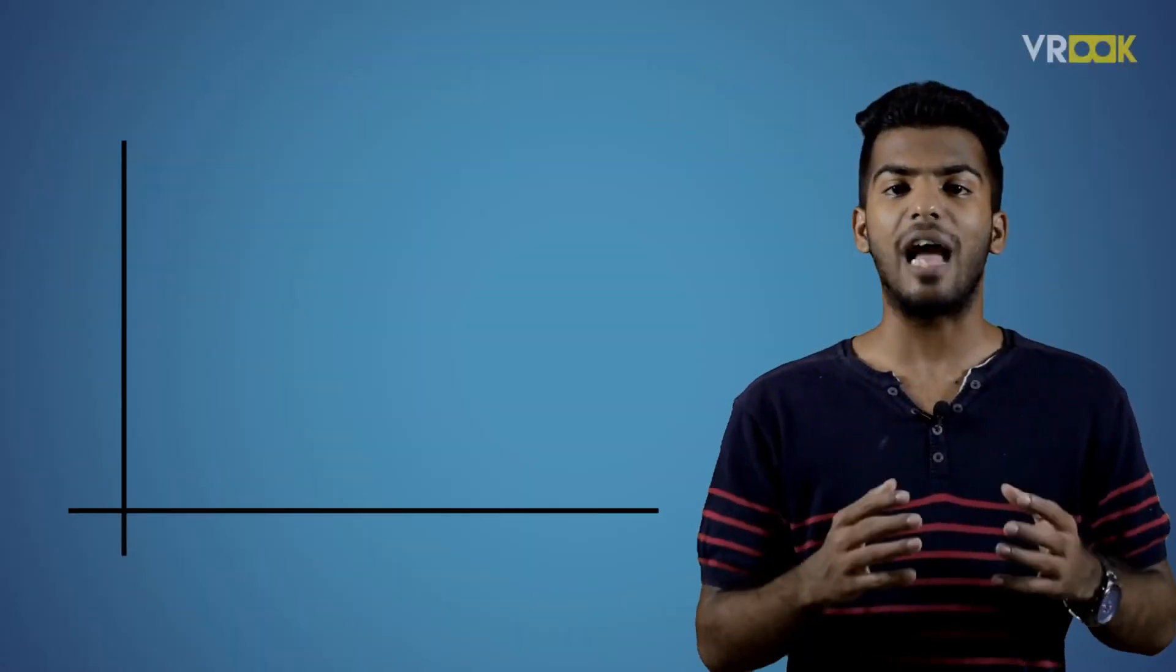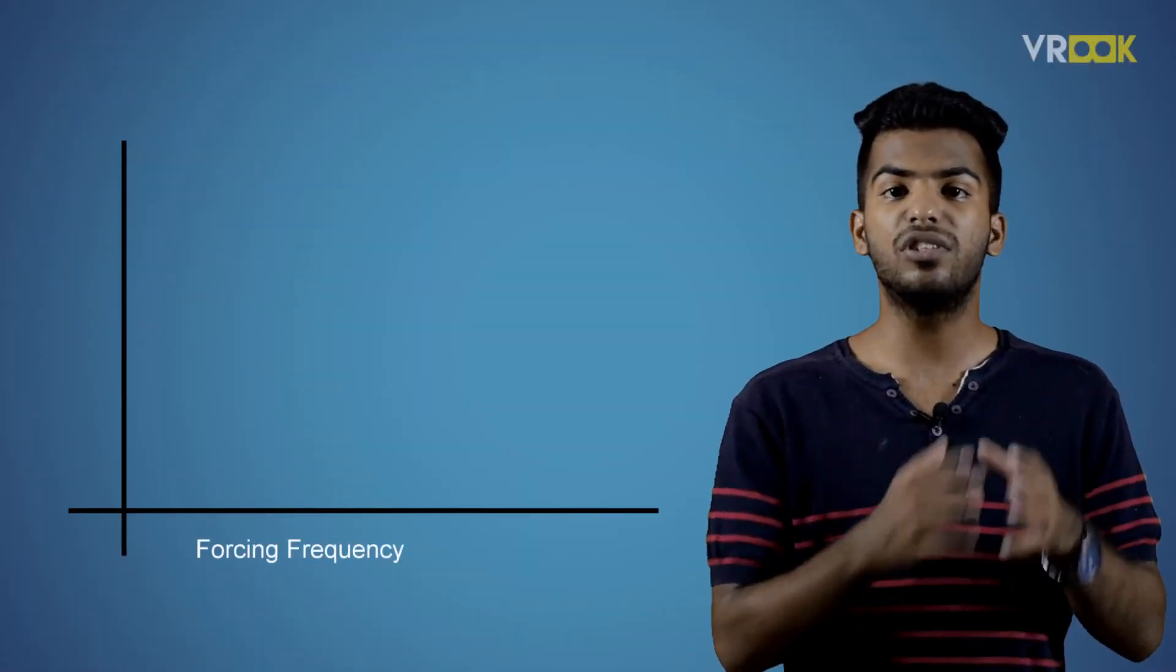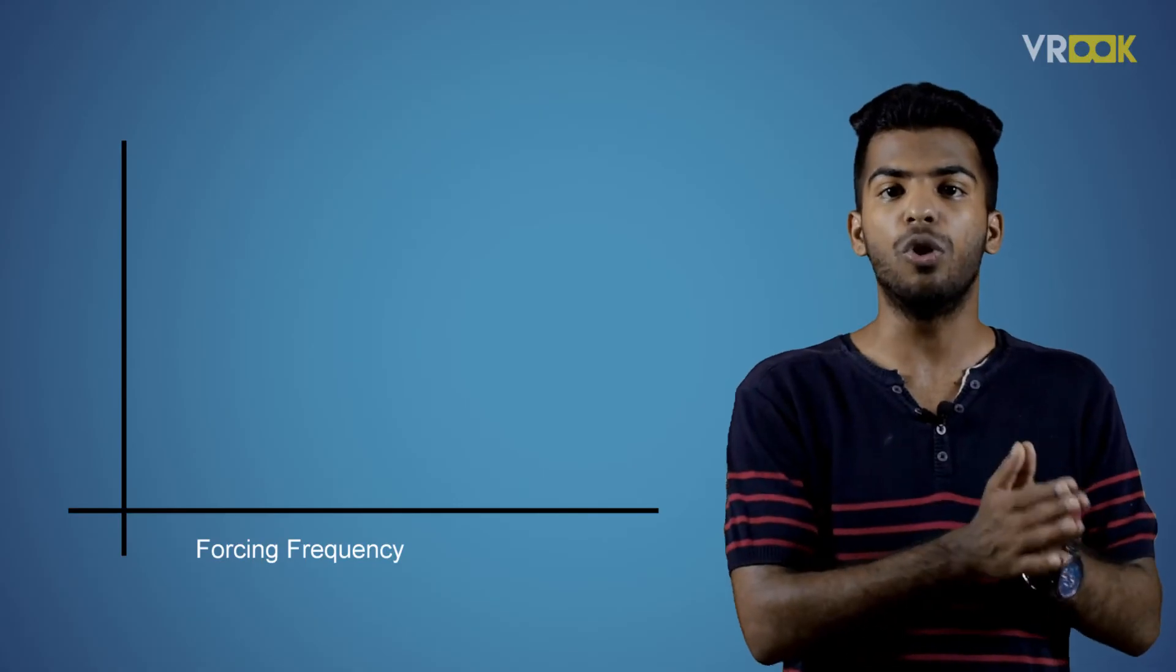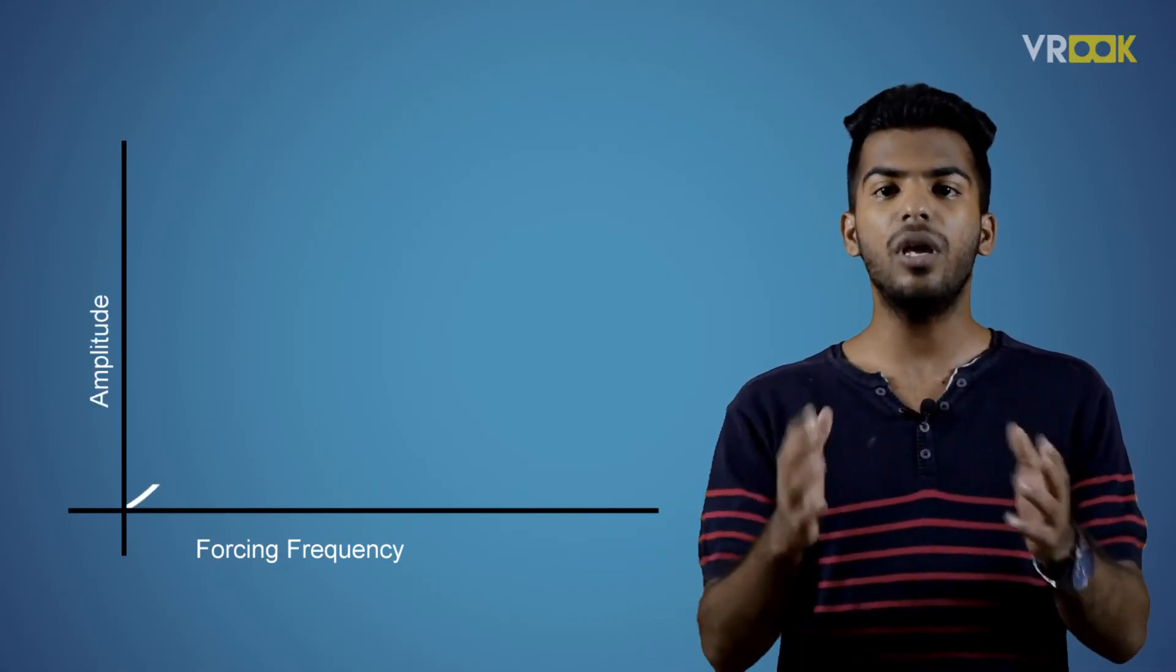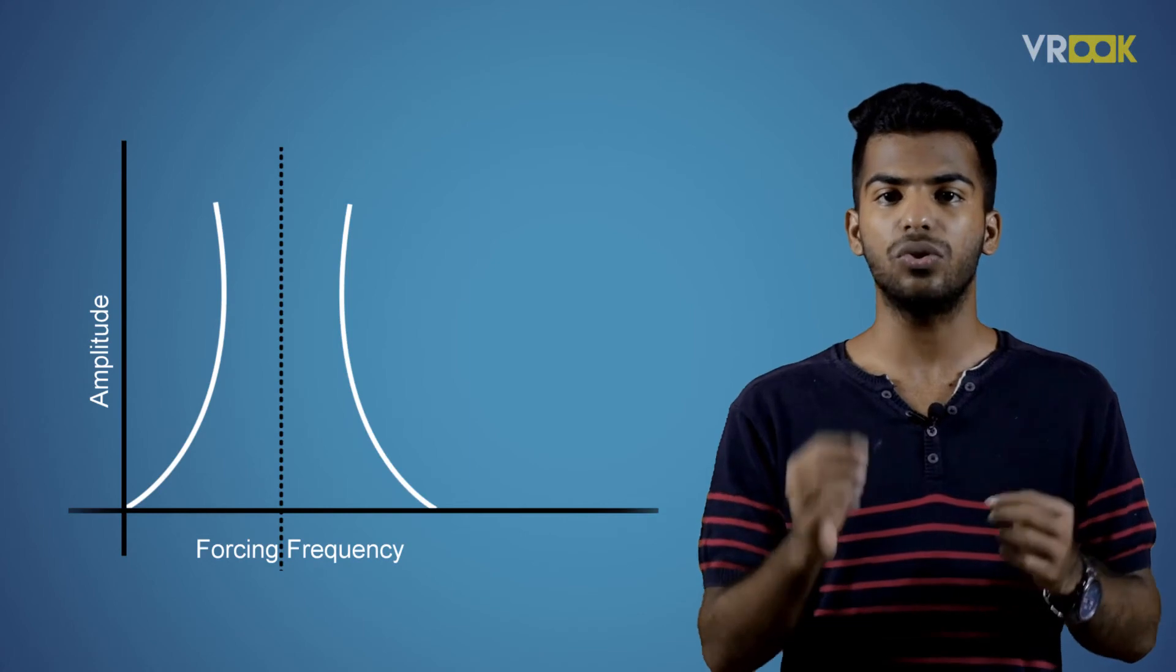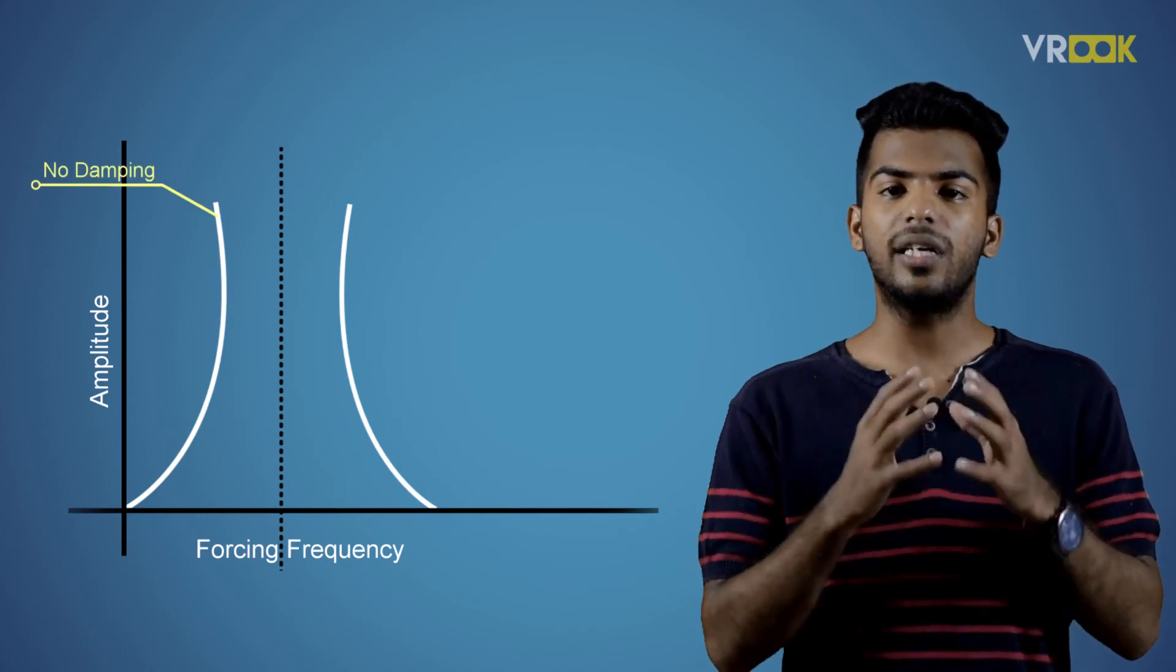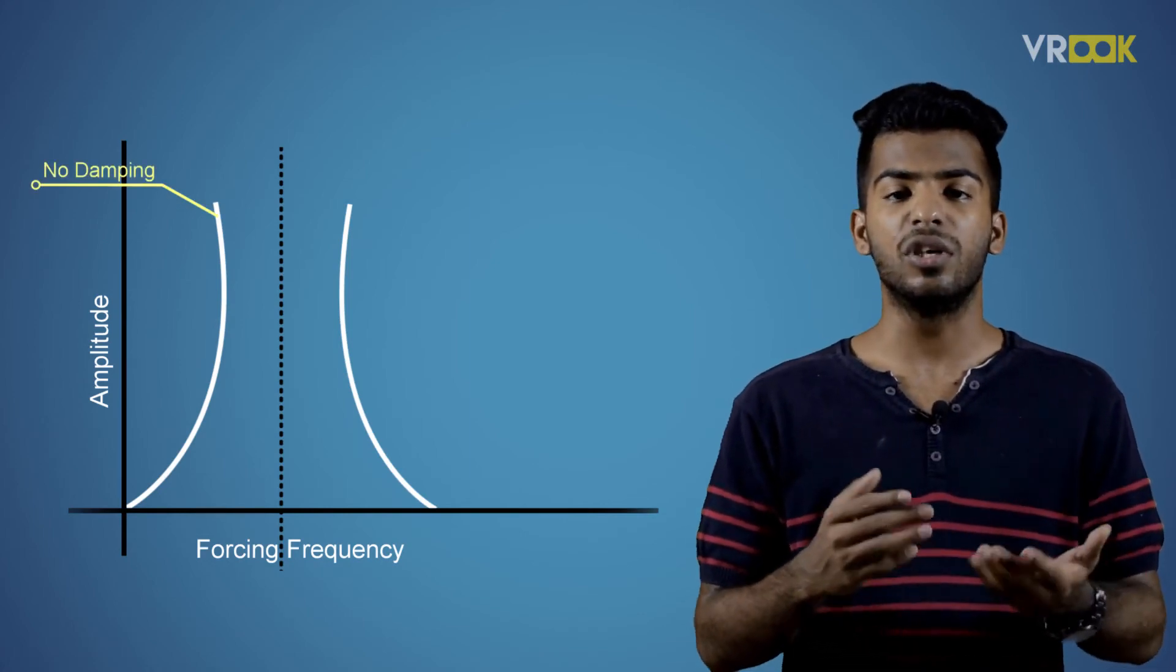When we plot the graph of forcing frequency, which the tuning fork 1 produced, versus the amplitude of vibration, we can observe the sharpness of resonance. It conveys where the resonance will be at maximum.